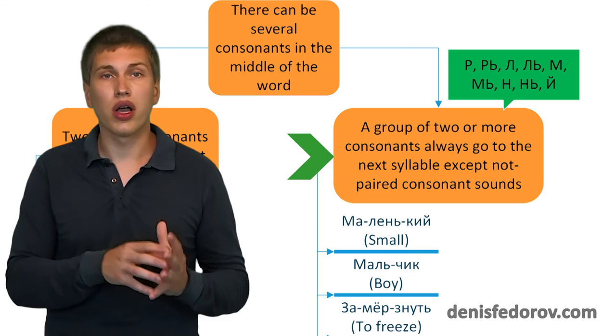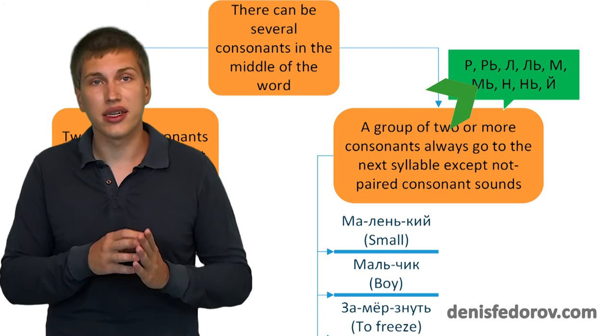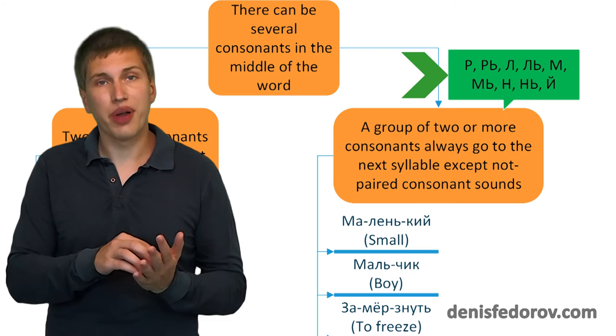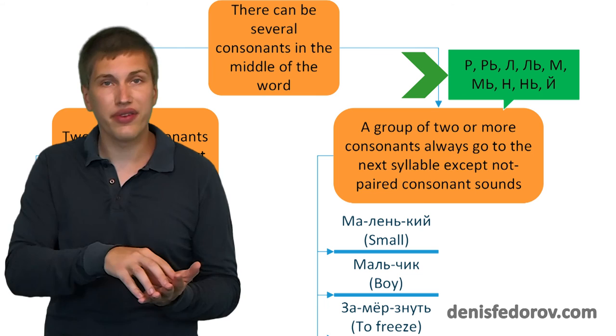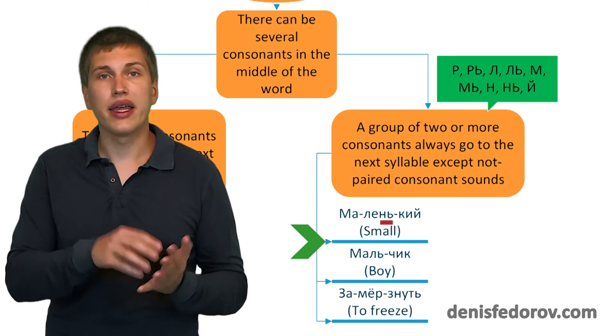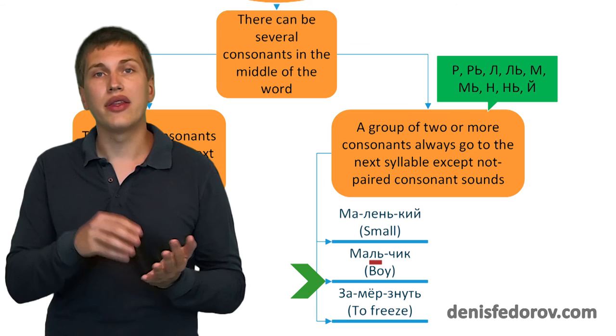The second specification says, two or more consonants always go to the next syllable except not paired consonant sounds. And here is the list of these not paired consonant sounds. So if we see a group of consonants, usually paired, and we see one of the non-paired consonant sounds, this not paired consonant sound stays in the previous syllable. Here are examples. The non-paired sound is Р. That's why it stays in the previous syllable and К goes to the next. The non-paired sound is Й. That's why it stays in the previous syllable and К goes to the next one.